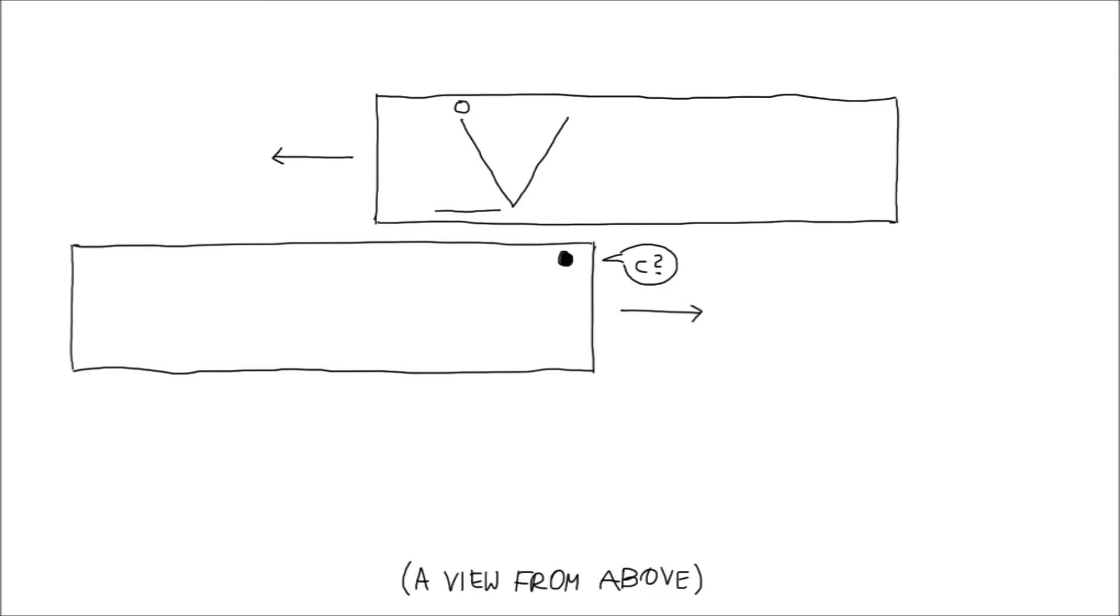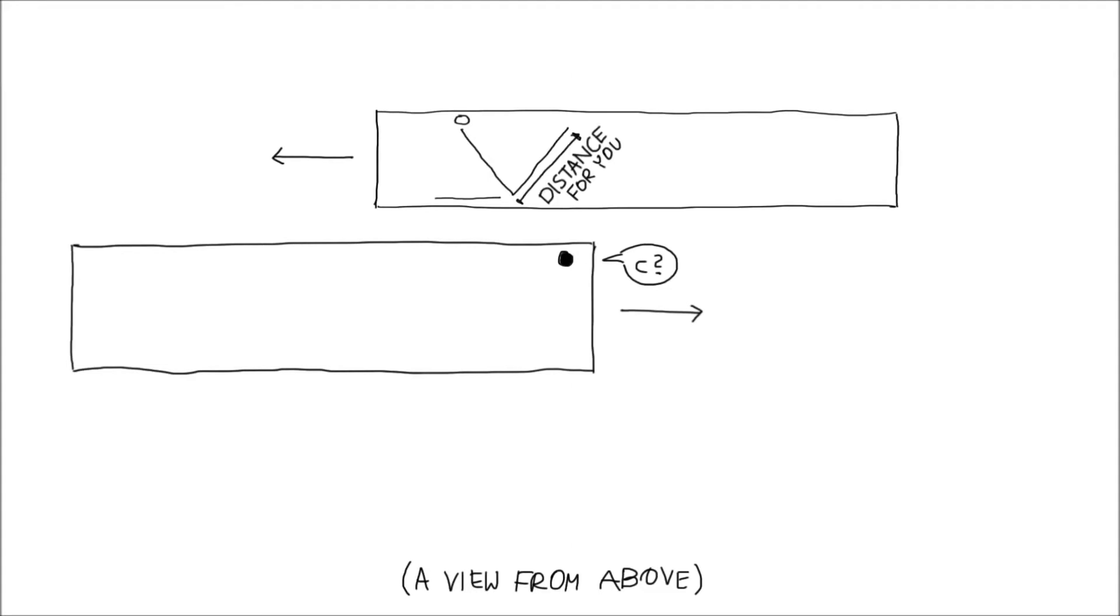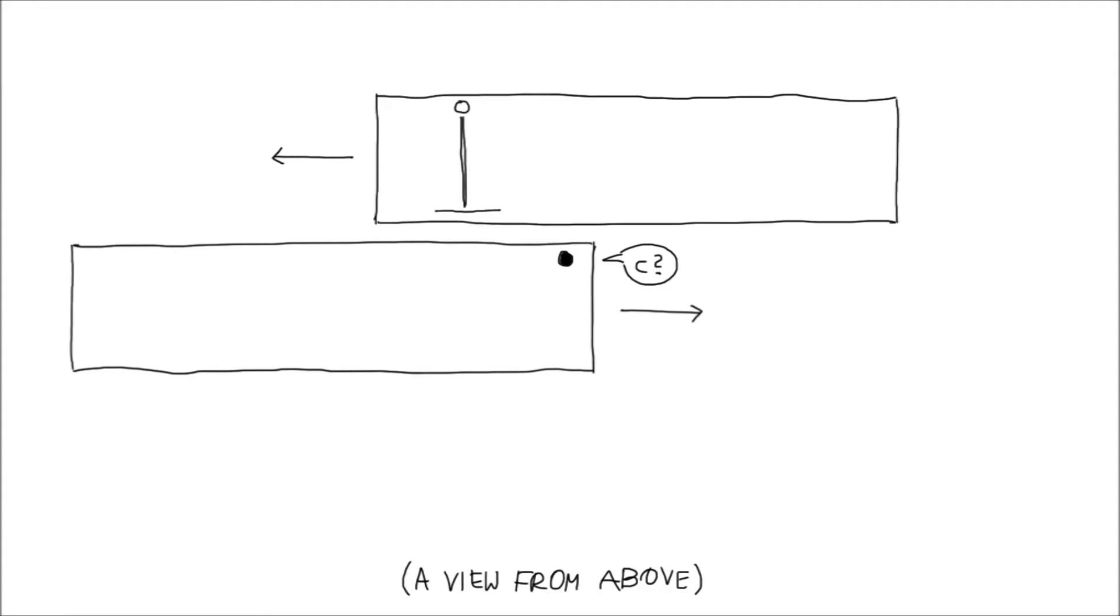First, we can say that the distance light travels in both cases is the same. This means that for you her train is squeezed so that a side of the triangle as you measure it is the same as the height of the triangle as she measures it.